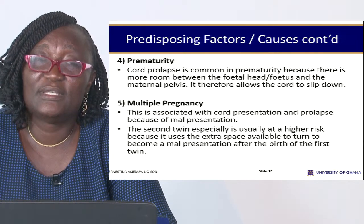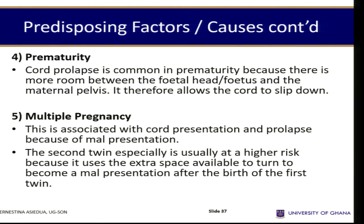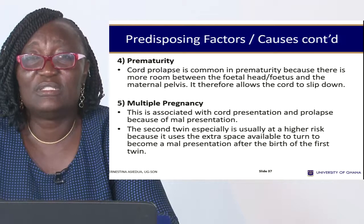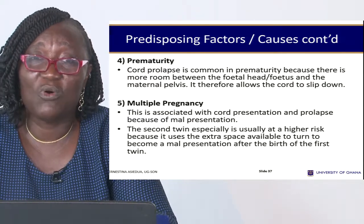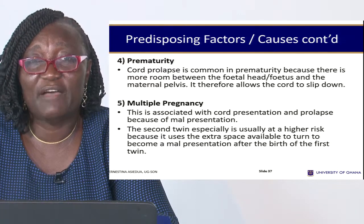Prematurity predisposes to cord prolapse because there is more room between the small fetal head and the maternal pelvis, so the cord can slip around and present first. Multiple pregnancies are associated with cord prolapse because of the high incidence of malpresentations. When there are two, three, or four babies, malpresentation is very common, and once you have malpresentation the cord can come in front and prolapse.